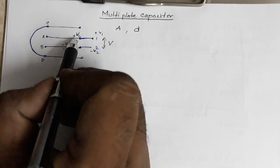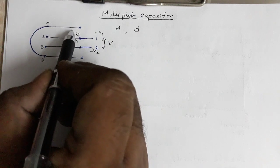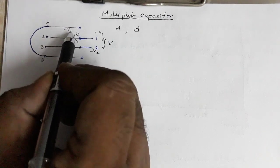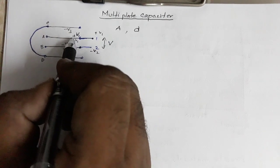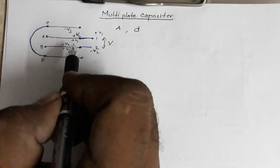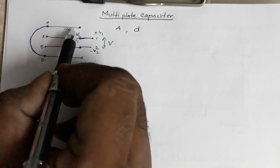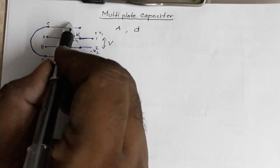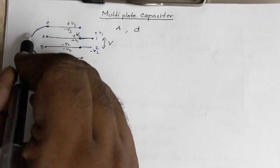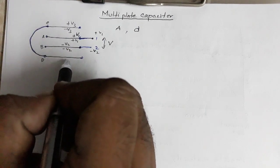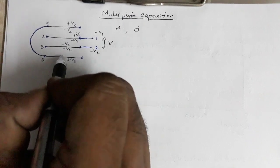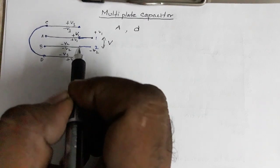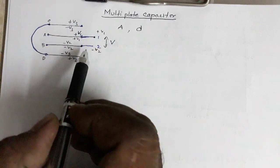Because of the charge at plus V1 on plate A, the charge induced on the adjacent floating plate is negative, so its potential on that side is minus V3. Since this side is minus V3, the other side of that floating plate will be plus V3. So this plate has potential minus V3 on one face and plus V3 on the other.